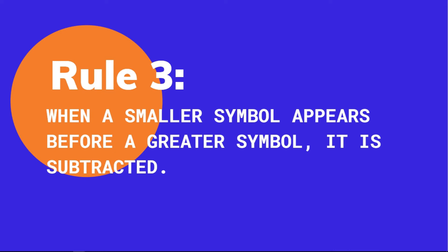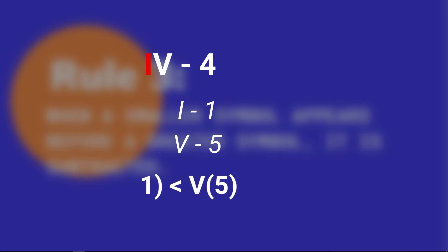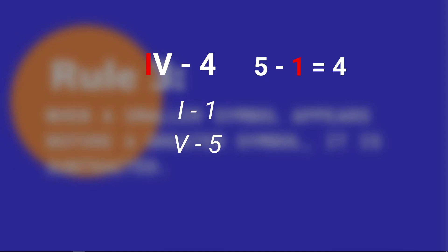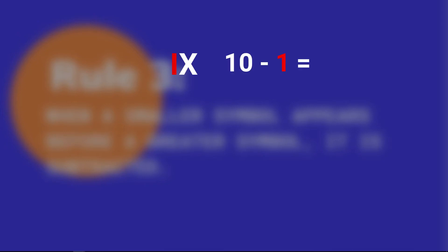The third rule says that whenever a smaller symbol appears before a greater symbol, then it is subtracted. For example, IV: we write 4 in Roman as IV. I means 1 and V means 5, so I comes before V where I is less than V, so we subtract I from V — that is 5 minus 1, which equals 4. Similarly, IX gives 10 minus 1, which is 9.